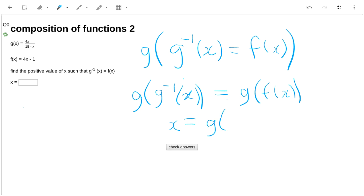And therefore, x equals 4 times 4x minus 1 divided by 15 minus 4x minus 1. x equals 16x minus 4.